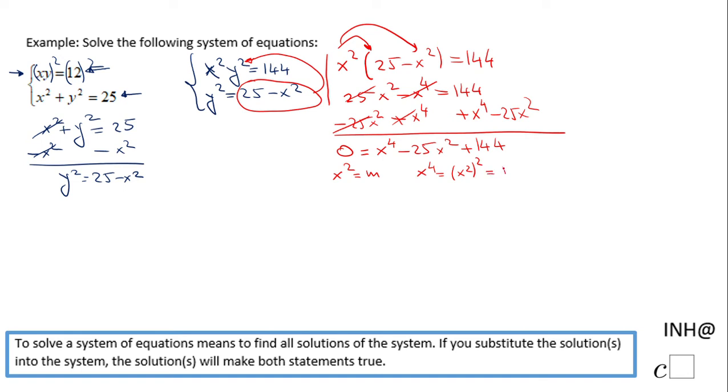So this equation will become m squared minus 25m plus 144 equals zero.